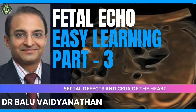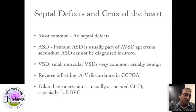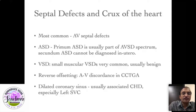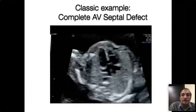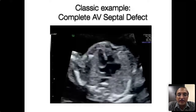The final group in the four-chamber view is the septal defects and the crux of the heart. I'm mostly going to focus on the AV septal defect and also show you CC-TGA four-chamber view, because it very deceptively looks normal. This is an example of a complete AV septal defect — when you look at the center portion of the heart you can make out the defect.